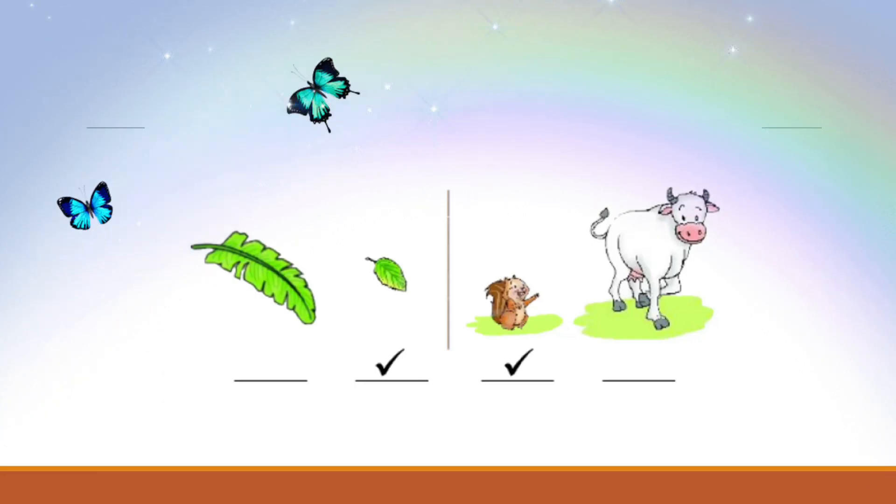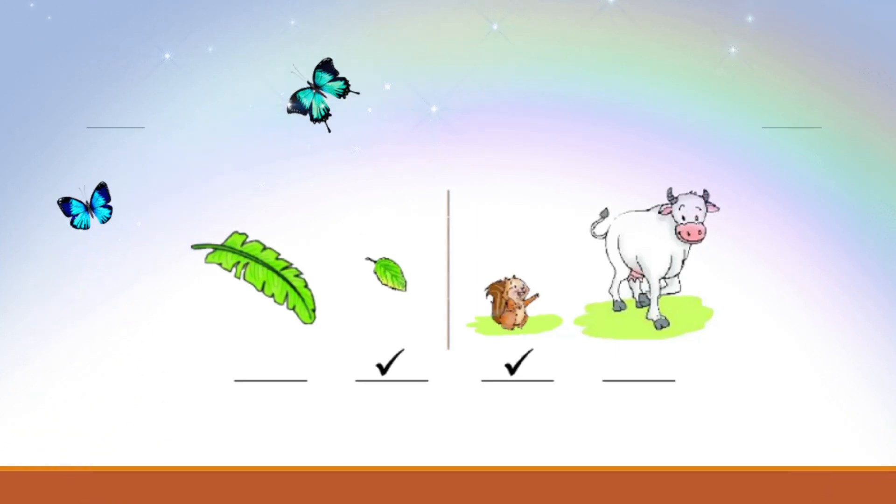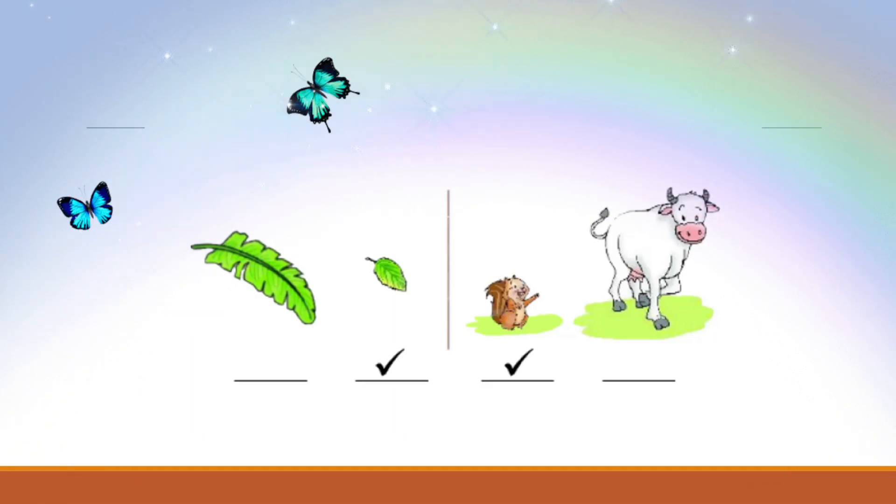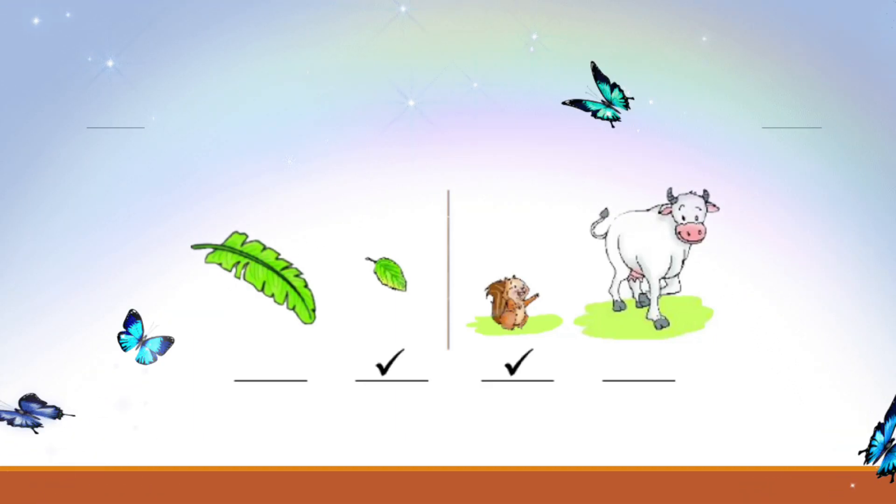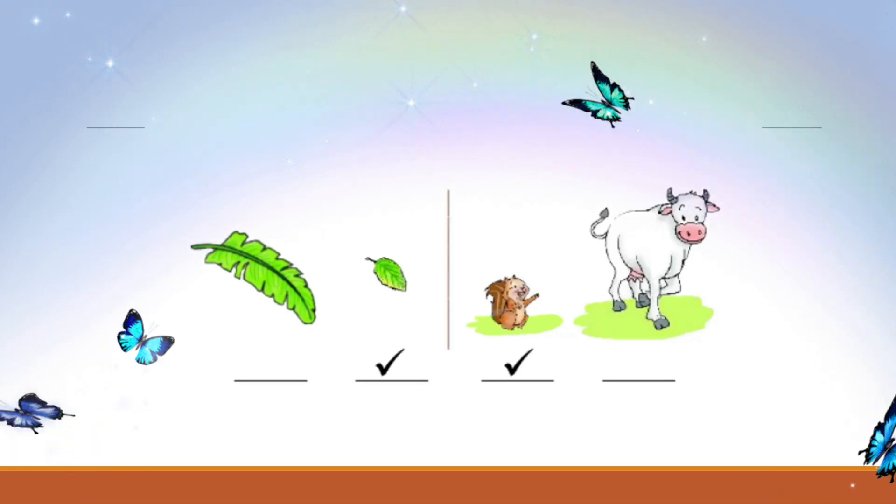This is a banana leaf. Banana leaves are large and wide, perfect for serving food or making beautiful crafts. And this tiny leaf is an apple leaf. Apple leaves are much smaller compared to banana leaves. So, what do you think, kids? Which one is smaller, the banana leaf or the apple leaf?